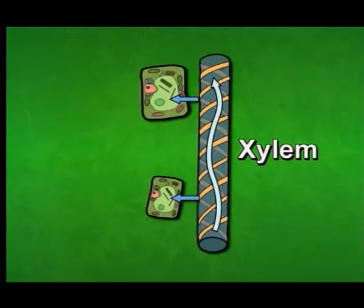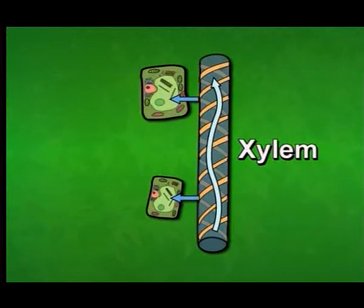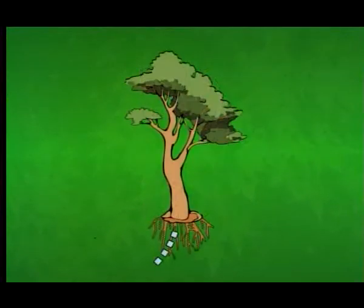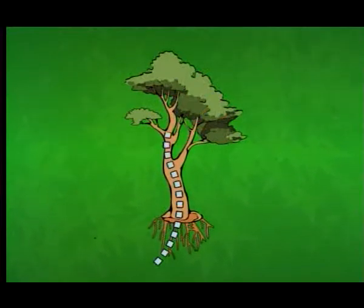Water is replaced by water from the xylem. This sets up a tension, or force, that pulls the entire column of water, by capillarity, up through the xylem. Ultimately, the water column is pulled up from the roots.